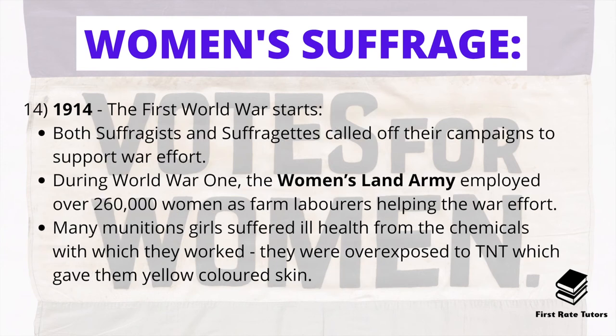In 1914 the First World War began, and both suffragists and suffragettes called off their campaigns to support the war effort. During the war, many women truly stepped up: the Women's Land Army employed over 260,000 women as farm labourers, filling roles left by men called to war. Many women also worked in munitions factories — known as munitions women — and suffered ill health from chemical exposure, including TNT which gave them yellow-coloured skin, highlighting the sacrifices women made to help Britain win the First World War.